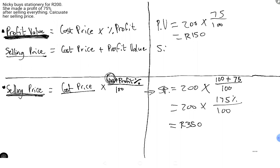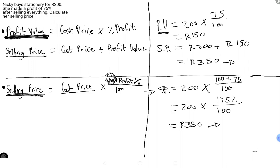The 150 rands is the profit value — the amount Nikki makes above what she bought for. Now the selling price equals cost price plus profit value: 200 plus 150, which gives us 350 rands. So the 150 is on top of what Nikki spent. Add them together: 200 plus 150 equals 350.